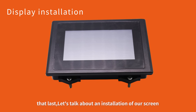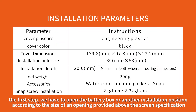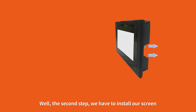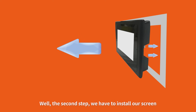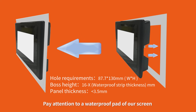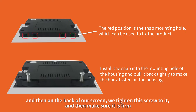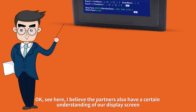Now let's talk about the installation of the screen. The first step: open the battery box or another installation position according to the opening size provided in the screen specifications. The second step: install the screen — pay attention to the waterproof pad and waterproof gasket, which must not be lost, as this gives the screen a very high waterproof rating. On the back of the screen, tighten the screws to make sure it is firm.